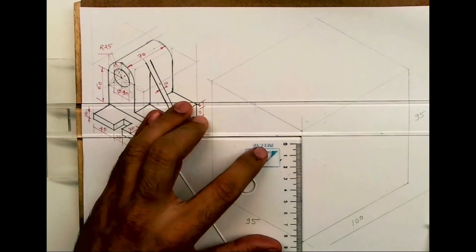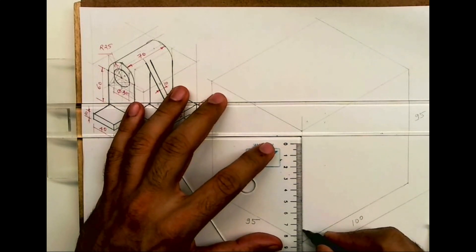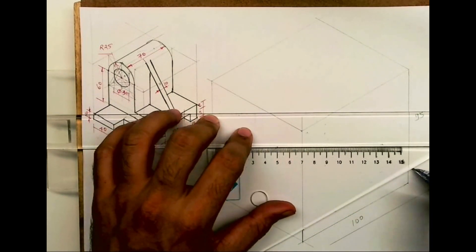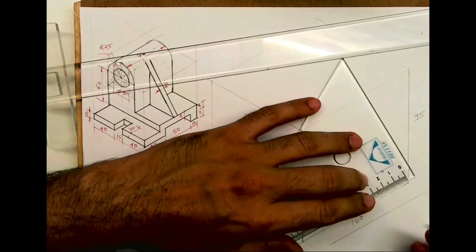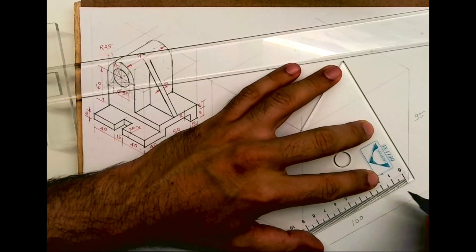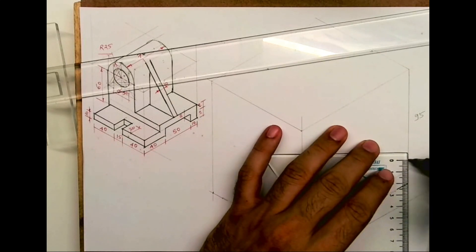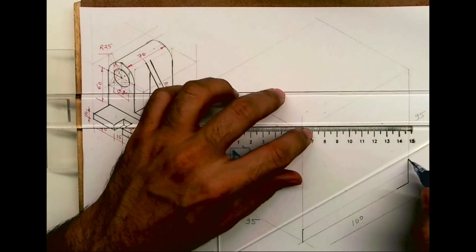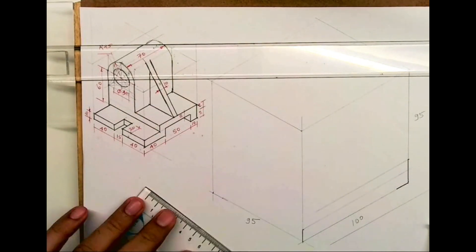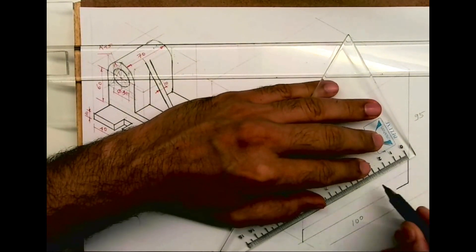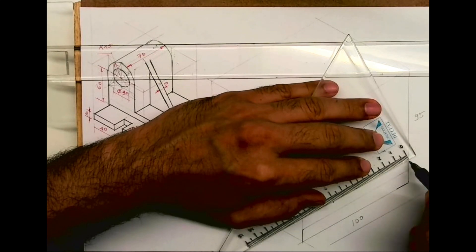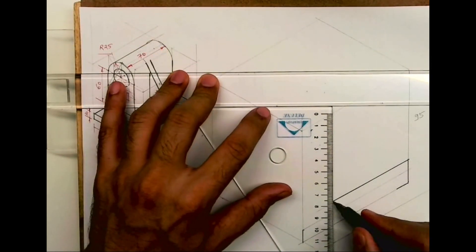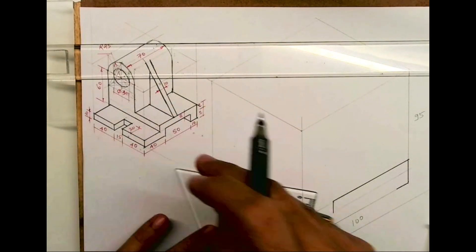Height is 10, then it goes inside. Now how much is that length? We don't know from here. We know it is 10. Then it goes up by 10. Here it is 20, then this length is 70. Then you come down, so this is how you will get this part.